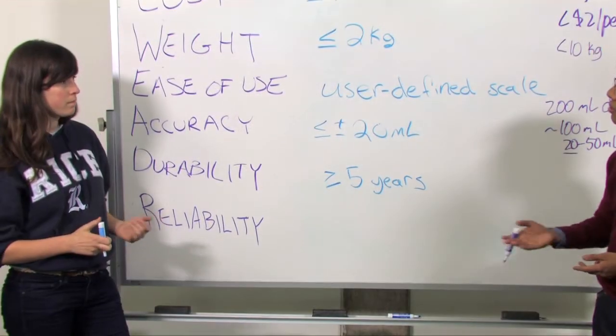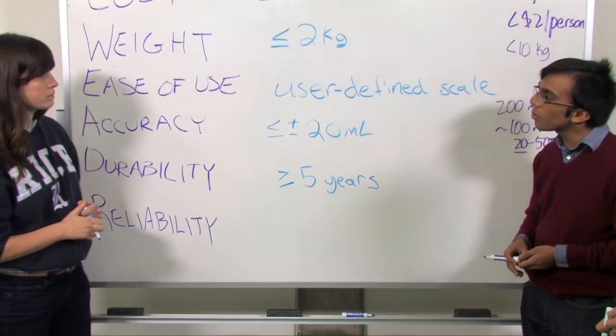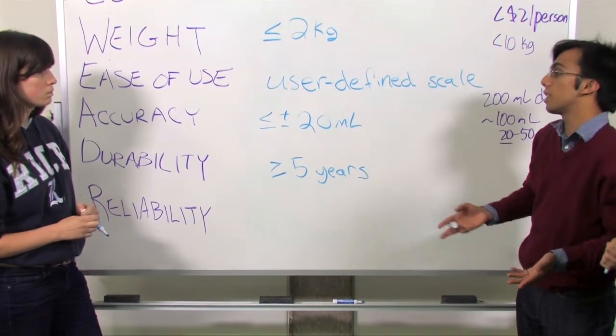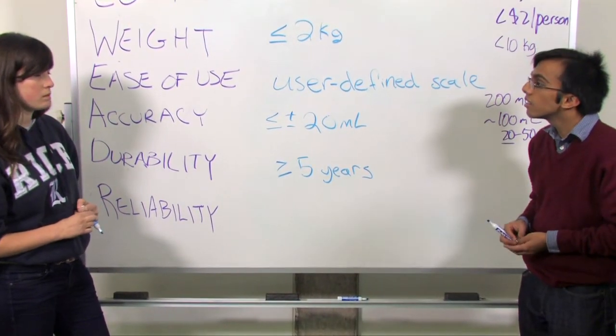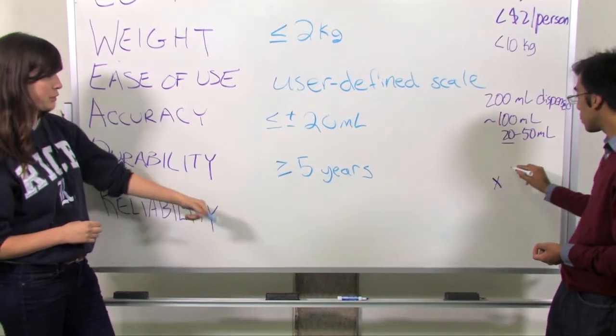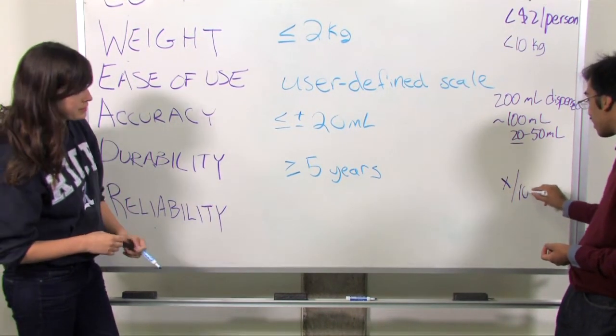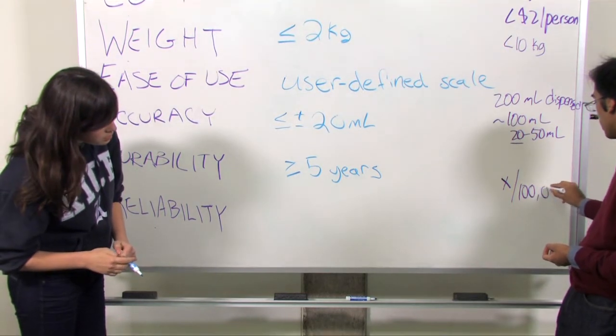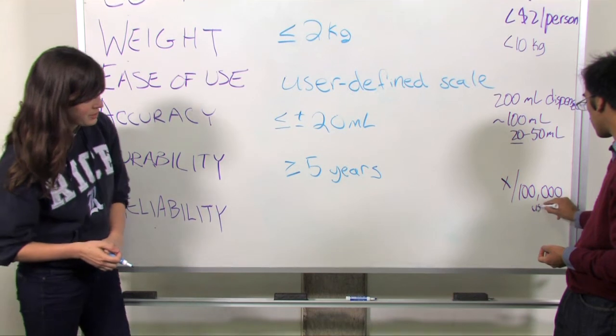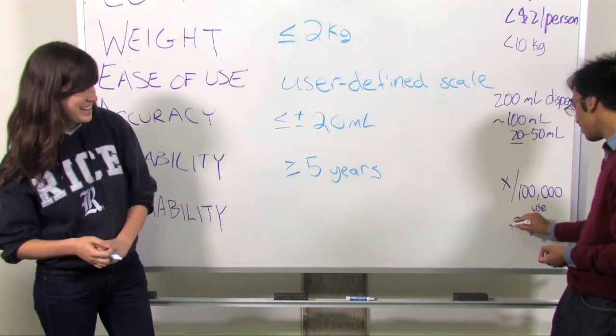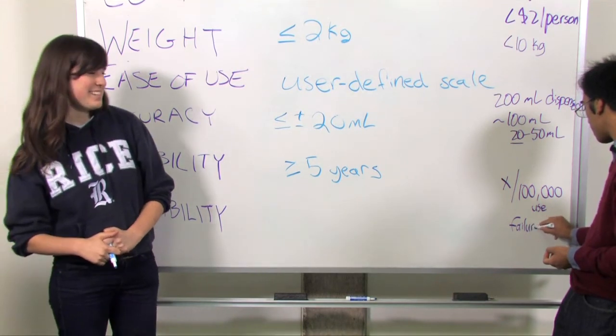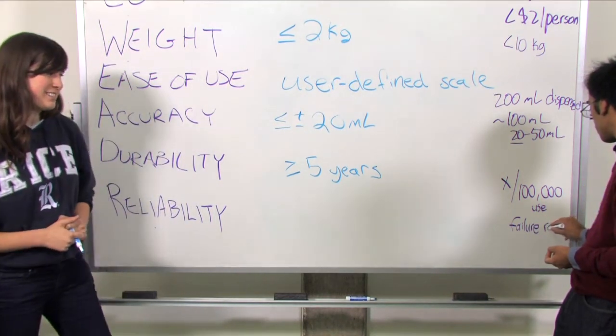So I think one thing that I read about was one way to quantify reliability is like a failure rate, like x times in 100,000 uses. Okay. So reliability would be quantified by things going wrong. Yeah. We want to minimize that. So how many times would we do it? I mean, since a patient's life is at stake, hopefully zero, but I guess that's not very realistic. Yeah, it's impossible to have a zero percent failure rate.